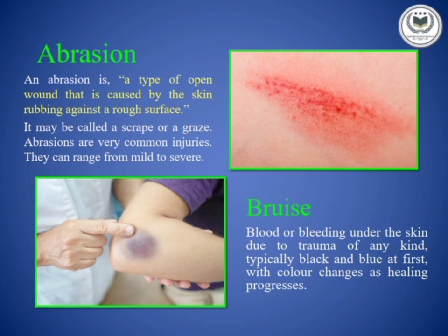What is abrasion? Simply, an abrasion can be defined as a scratch mark on the body. It happens when the skin is rubbed against a rough surface, forming scratches or scrape-like structures. It is a common type of injury.